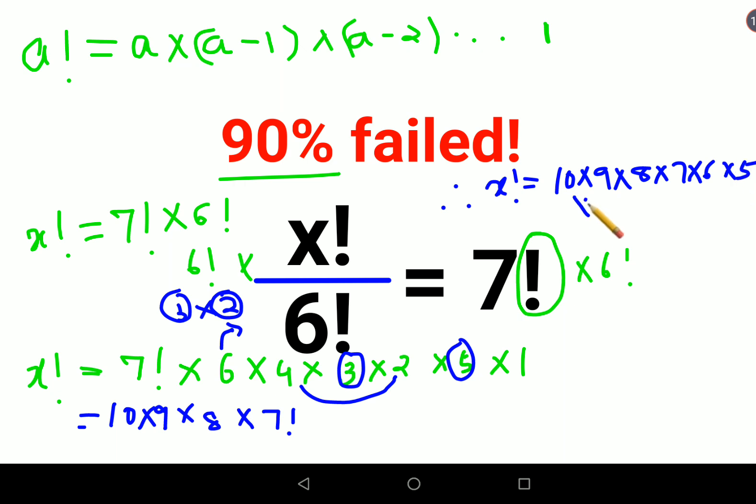So basically now I can say therefore x! = 10!. And therefore the value of x is nothing but just 10. I hope this is very clear to everyone. That's it for today, I will see you in the next video.